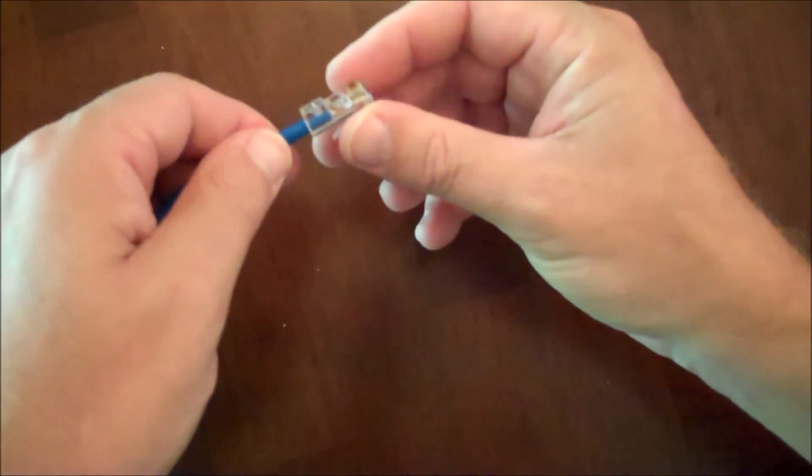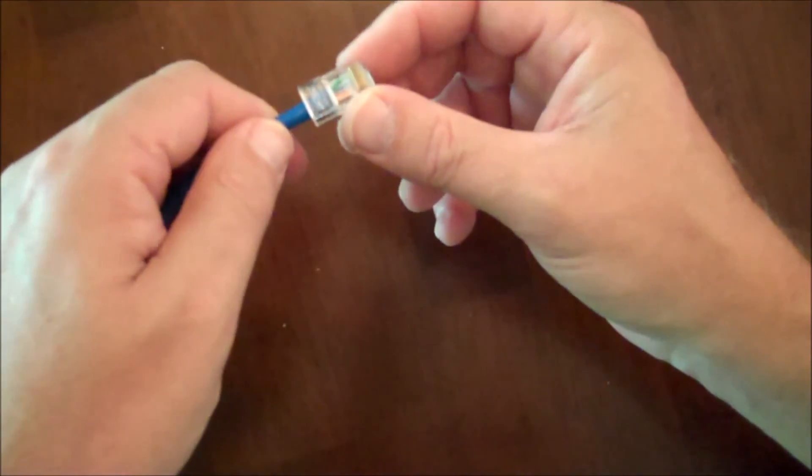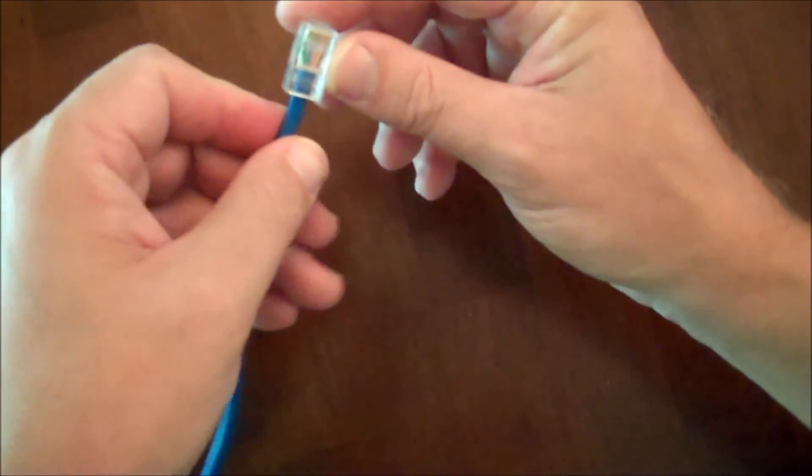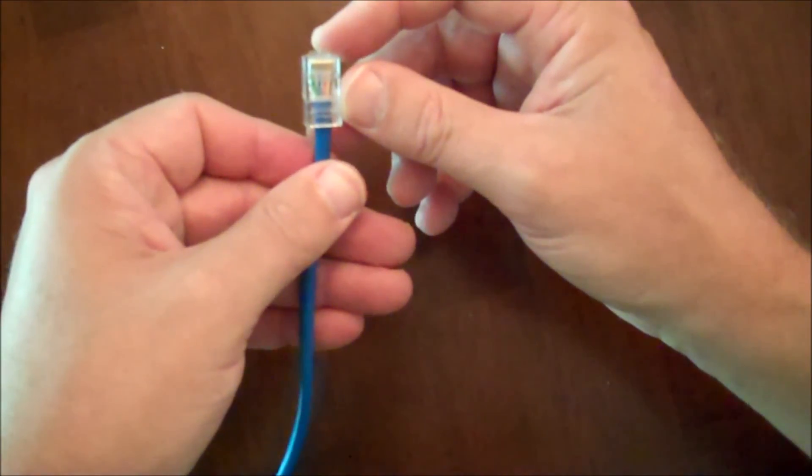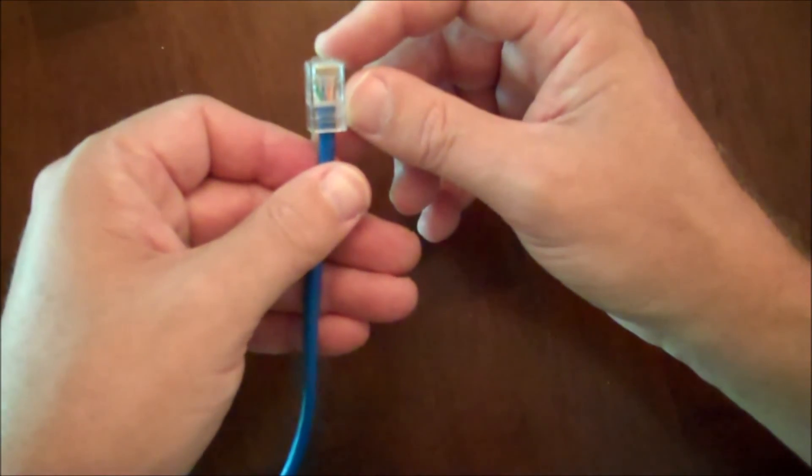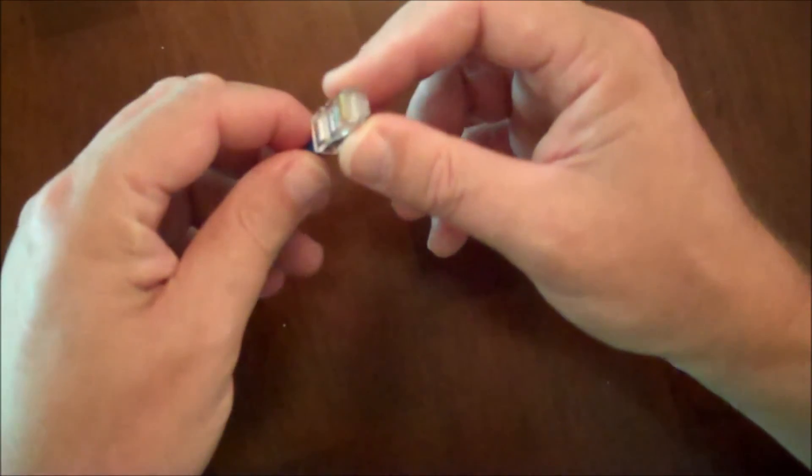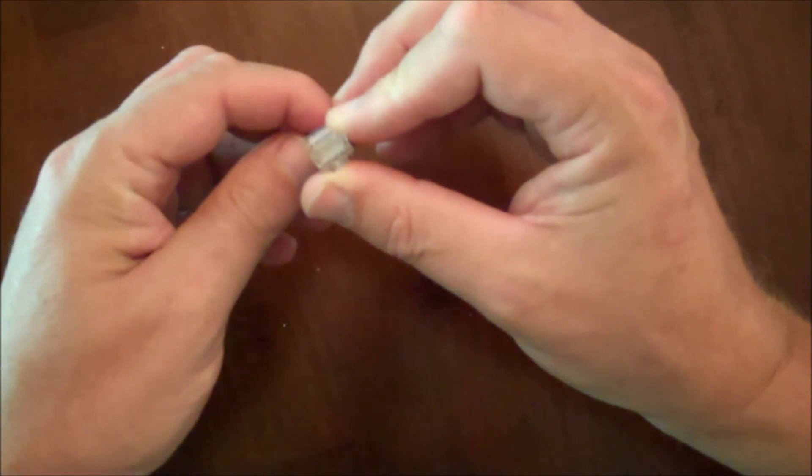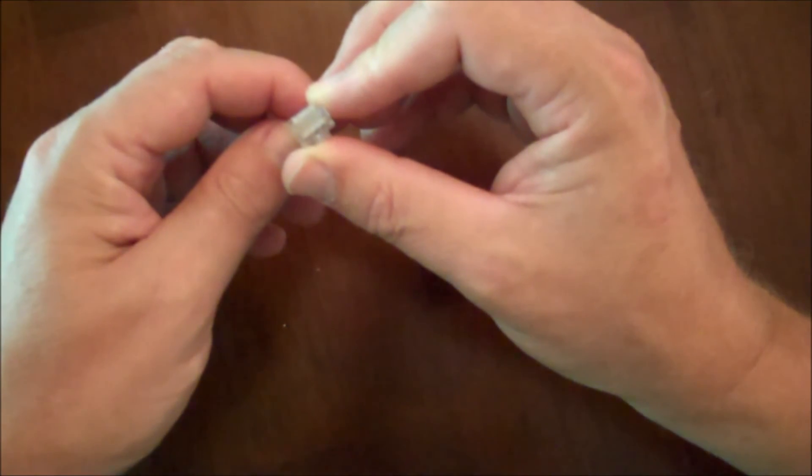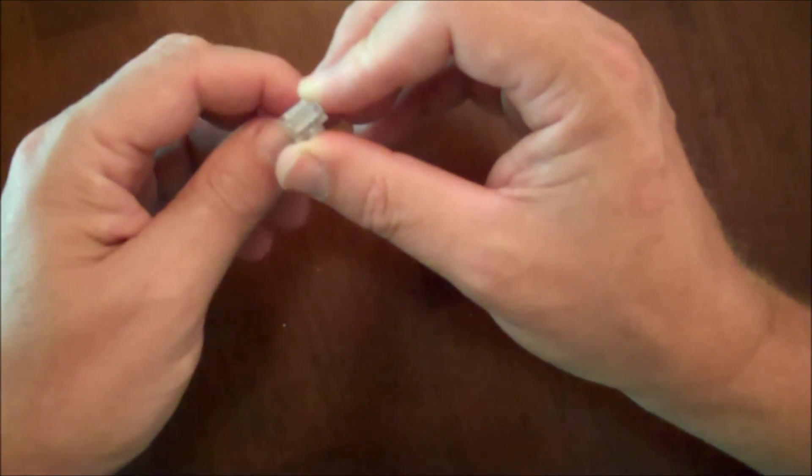You want to inspect the plug to make sure that all eight wires fully seated. You can look at the top to make sure the correct color-coded wire landed in the correct pin, and they have. Then you can look at the end and see that the wire seated itself all the way to the end of the RJ45 plug, and it has.